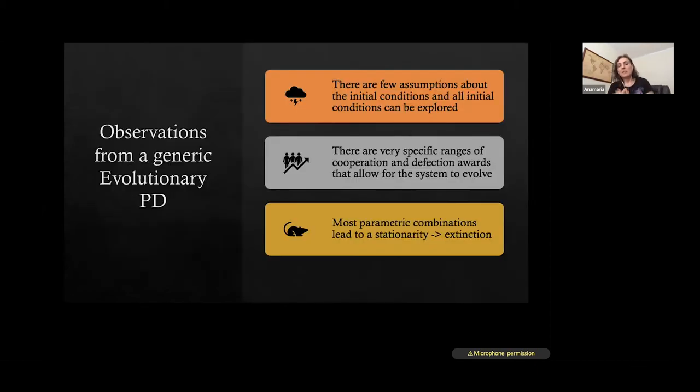Some observations that we can draw from a genetic evolutionary prisoner's dilemma is that there are few assumptions about the initial conditions and all initial conditions can be explored. So we can explore a very wide range of initial conditions with respect to the population and the defection awards. There are very specific ranges of cooperation and defection awards that allow for the system to evolve. And most parametric combinations lead to stationarity, which means extinction. So from these, we can actually isolate only those parameters that lead to non-stationarity or to a system that keeps on evolving.